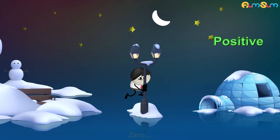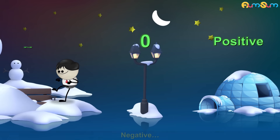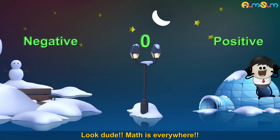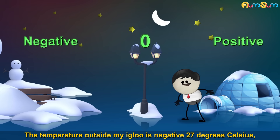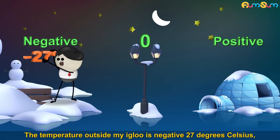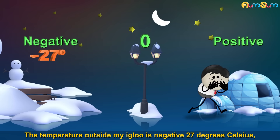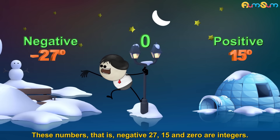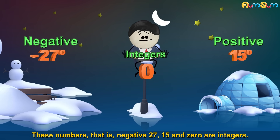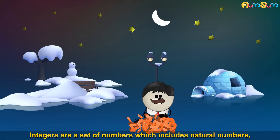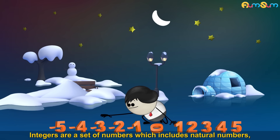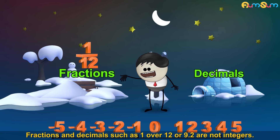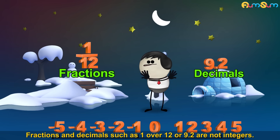Positive. Zero. Negative. Confused? Math is everywhere. The temperature outside my igloo is negative 27 degrees Celsius, while inside it is 15 degrees Celsius. These numbers — negative 27, 15, and 0 — are integers. Integers are a set of numbers which includes natural numbers, their negatives, as well as 0. Fractions and decimals such as 1 over 12 or 9.2 are not integers.